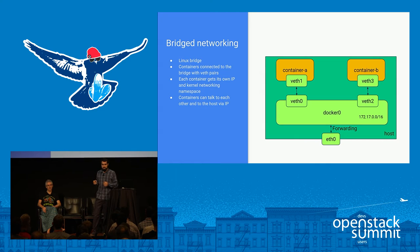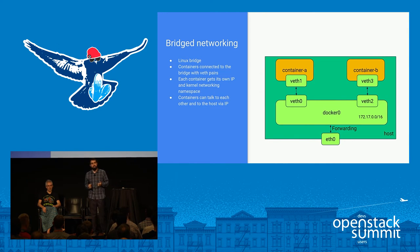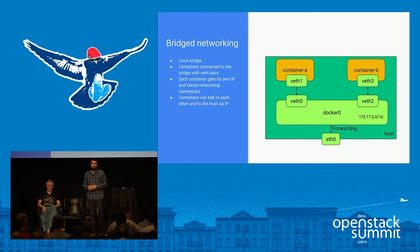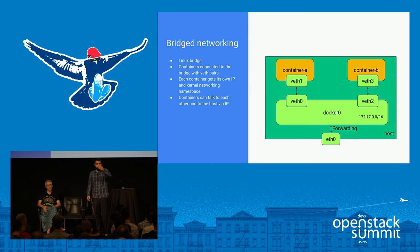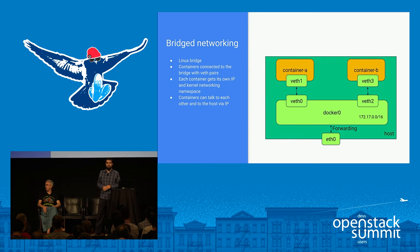One thing about host networking: when would you use it? A very typical use case is when you want to do infrastructure containers. For example, if you are running Kolla — your Nova, Neutron and so on running on containers — the most common way to network them is to place them in the host networking and have the host networking configured. You could do it otherwise with a VLAN-based networking driver, but it's not so common.